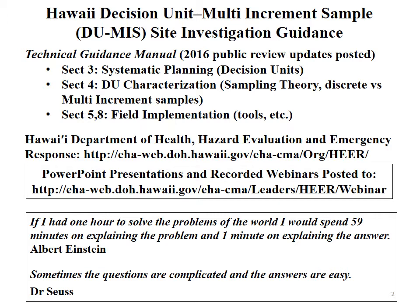We've talked quite a bit with people on the mainland U.S. and elsewhere doing DU-MIS type approaches. Section 5 covers how to designate and mark off decision units in the field, how to collect soil samples in soft versus hard-packed gravelly soil, what tools you need, how long it takes, and even how much it costs. We've just completed a series of webinars on each of these topics, posted to our webpage with YouTube links and PowerPoint presentations — free to use, no approval needed. Today we'll focus on discrete sampling methods.